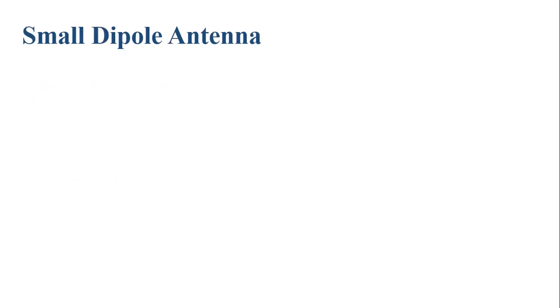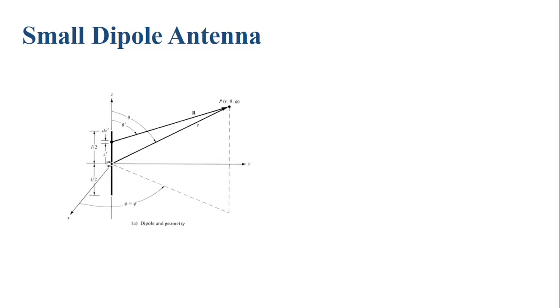Before starting with the analysis, let's see what the small dipole antenna is. The small dipole antenna is again a type of wire antenna whose length is very small — between lambda/10 and lambda/50.